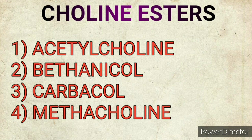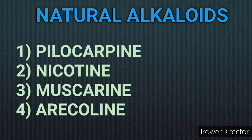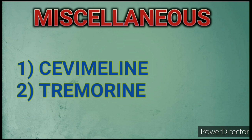Natural alkaloids are also classified into four groups. First is pilocarpine, obtained from leaves of plants like Pilocarpus. Second is nicotine, obtained from the plant Nicotiana tabacum. Third is muscarine, obtained from mushrooms, which leads to poisoning. Fourth is arecoline, generally from betel nuts, also called supari in Hindi.